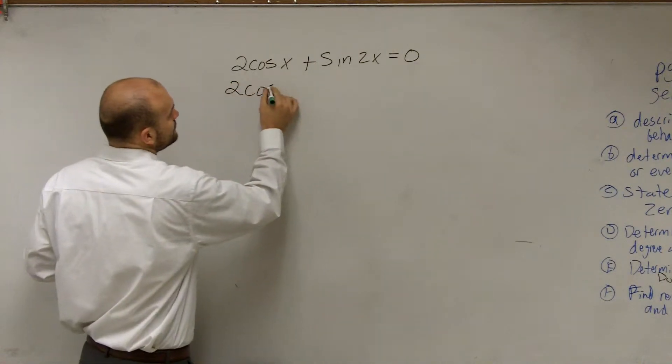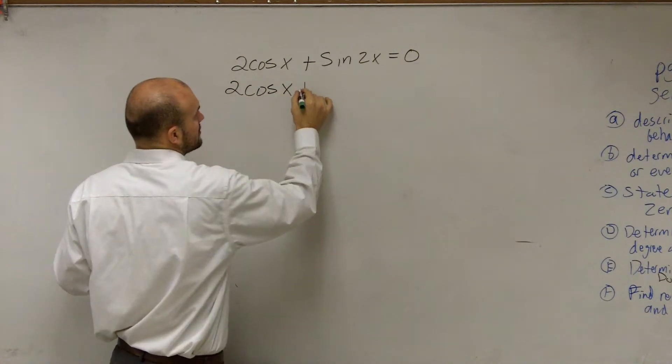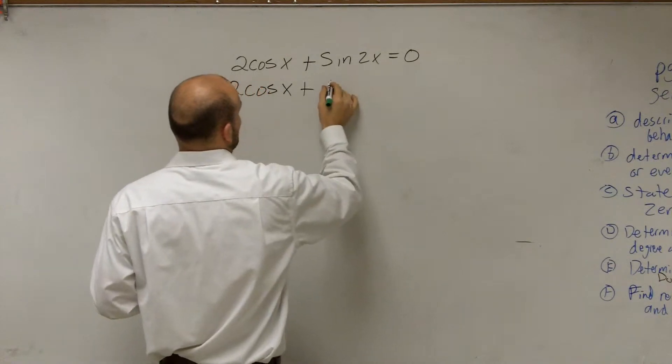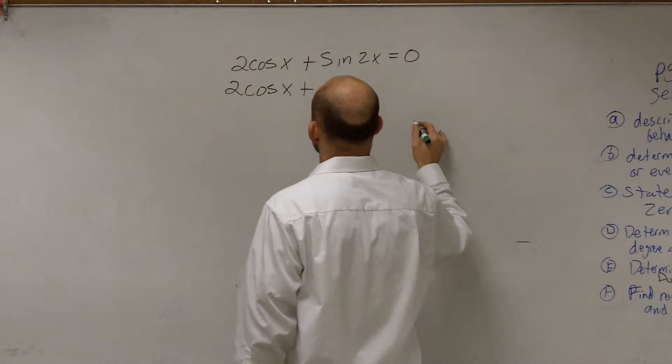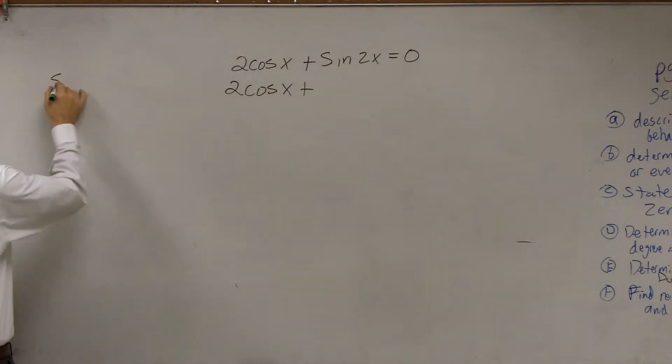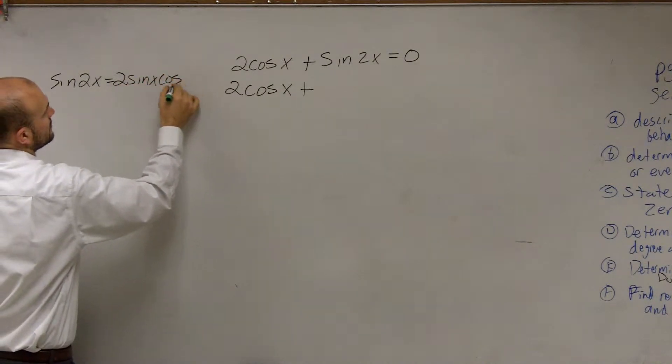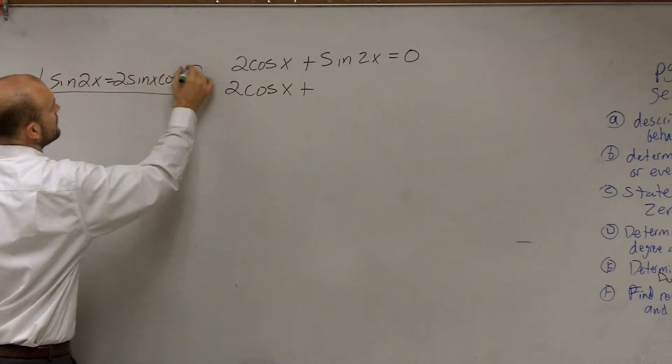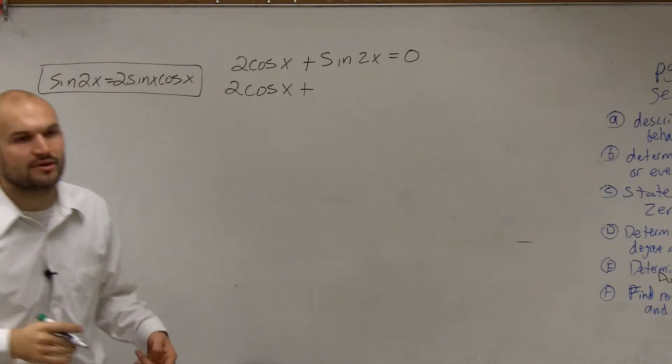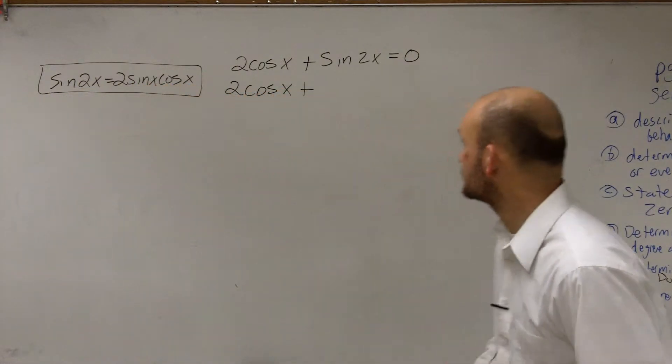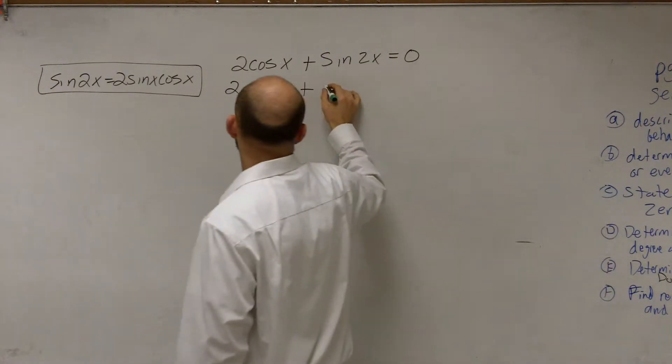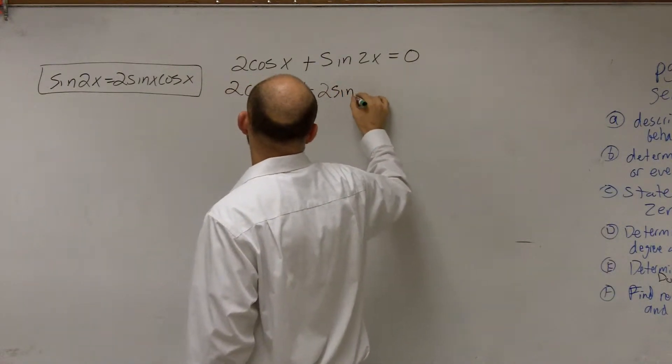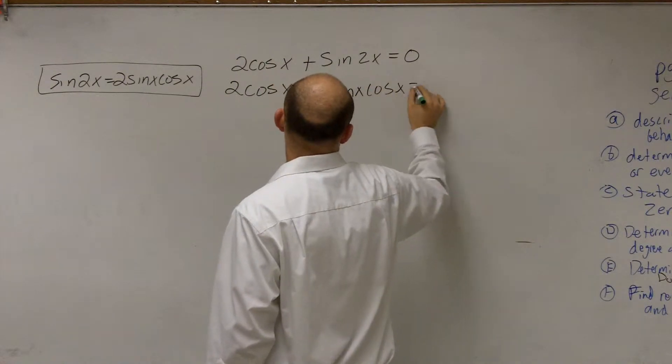So now I can write 2 cosine of x plus the sine of 2x. Let's go and write this over here. The sine of 2x equals 2 sine of x cosine of x. So that's the double angle formula that I'm going to use. So now I'm just going to rewrite sine of 2x. Rather than write it like that, I'm now going to write it as 2 sine of x cosine of x equals zero.